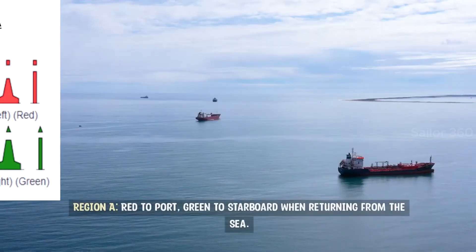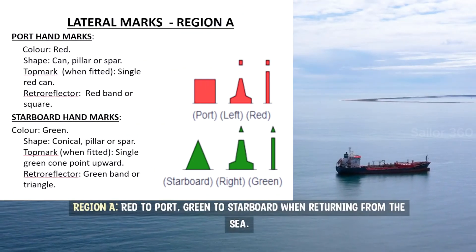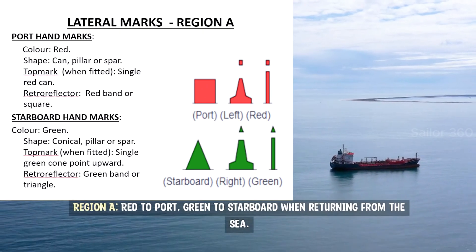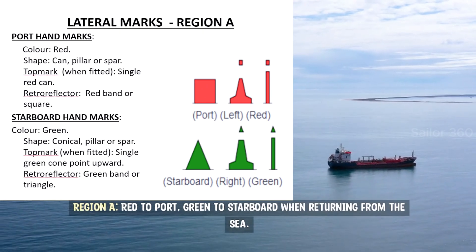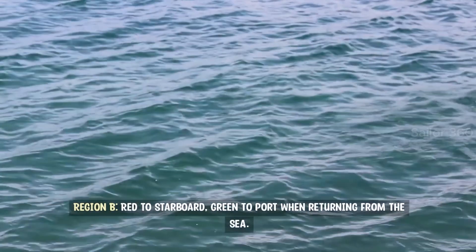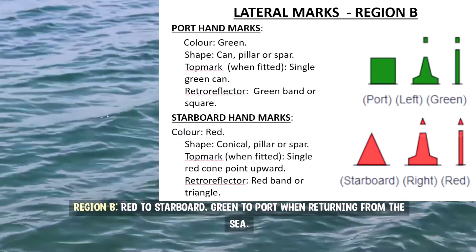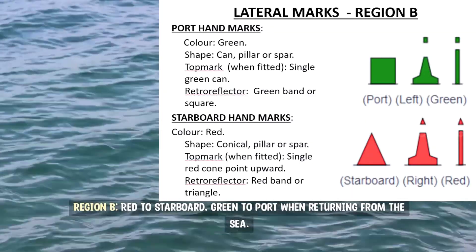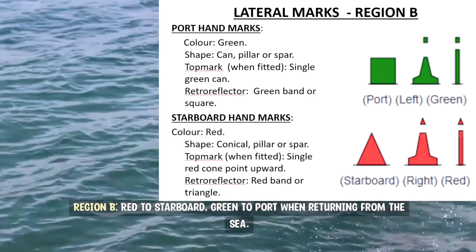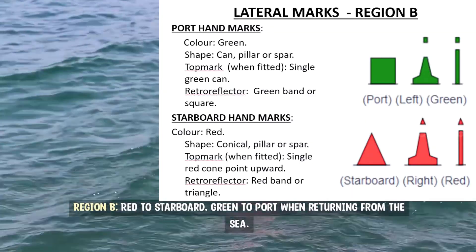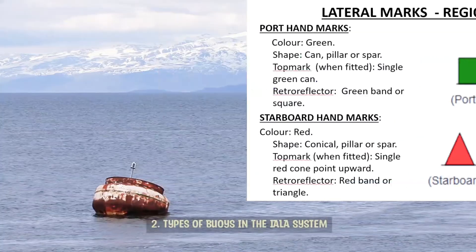Region A: red to port, green to starboard when returning from the sea. Region B: red to starboard, green to port when returning from the sea.